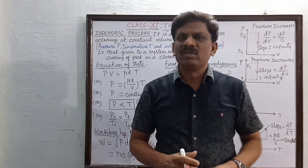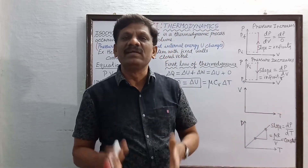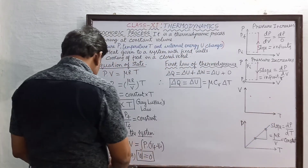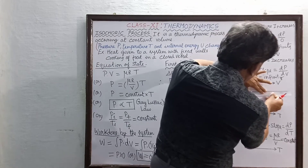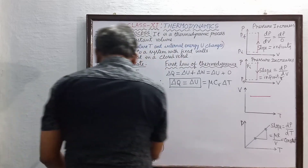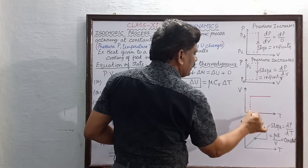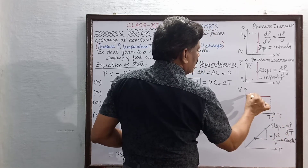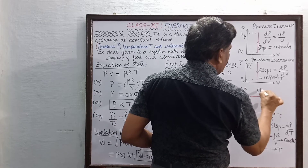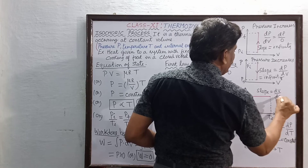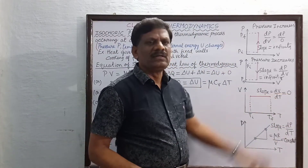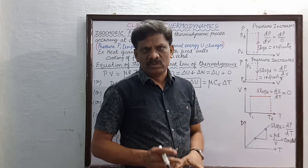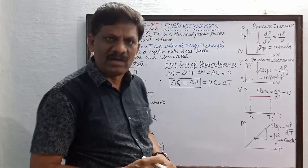For the volume-temperature graph: as temperature increases, volume remains constant. So the VT graph is a horizontal straight line — volume stays the same from initial temperature T_i to final temperature T_f. The slope of this graph is dV/dT = 0, because there is no change in volume. These graphs are important for competitive exams.